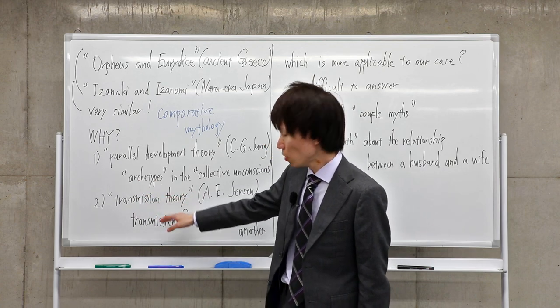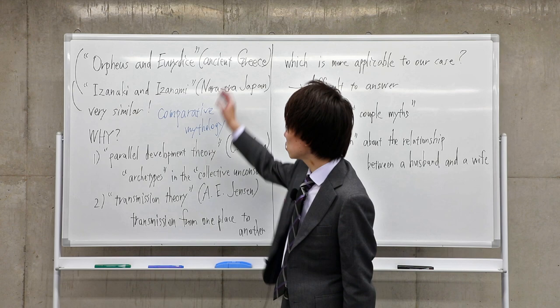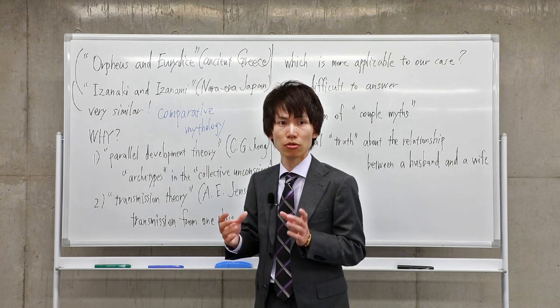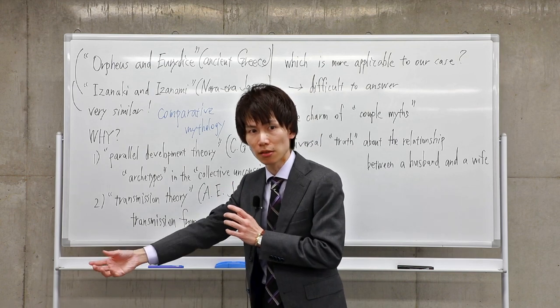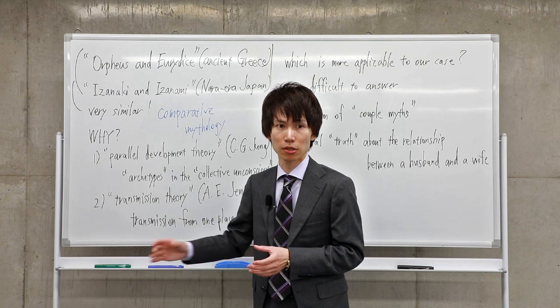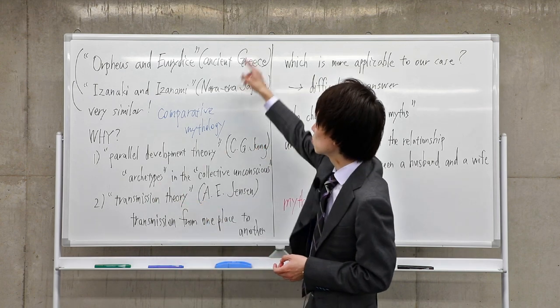And if we apply this theory to our case, the character type of the ancient Greek Orpheus and Eurydice story is transmitted to Japan sometime in the historical process. That's why these two stories are similar.